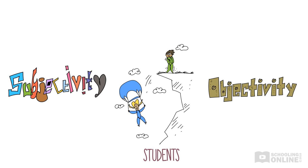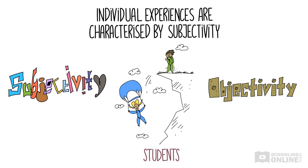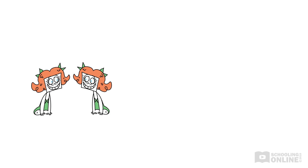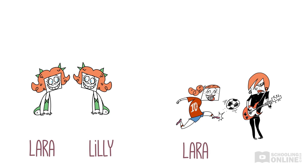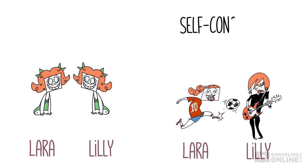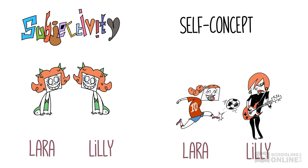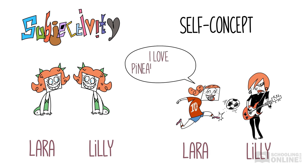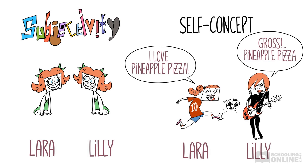So we could say that individual experiences are characterised by subjectivity. Even the same experiences will be different for different people. For example, Lara and Lily are identical twins. They share exactly the same genetic makeup, were raised in the same home environment and grew up in the same society and culture. But at the end of the day, they are totally different people with very different ideas of who they are. They each have a highly unique self-concept — because of the subjectivity of their individual experiences. They will react differently to similar situations and have their own opinions, preferences and beliefs about the world.